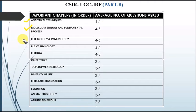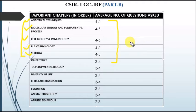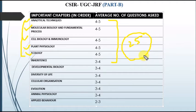4 to 5 questions also come from molecular biology, cell biology and immunology, plant physiology, and ecology. These are the most important chapters. If you study these chapters thoroughly, you can easily attempt 25 questions from Part B. If you answer 25 questions correctly in Part B, you will surely get selected in the CSIR examination.